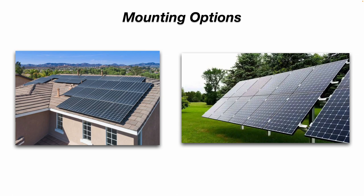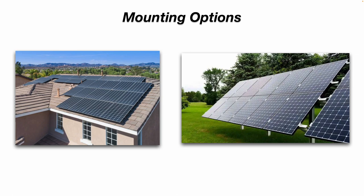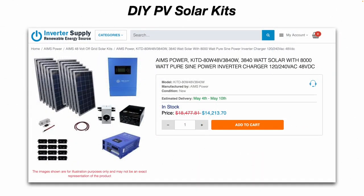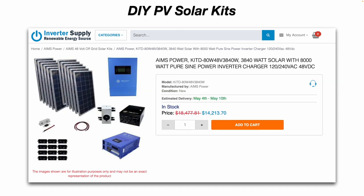A couple more points about solar panels from an insurance or maintenance standpoint. If you live somewhere that gets a lot of snow or hail, talk to your solar panel company about that before you buy. Ask them what sort of maintenance they provide and what warranty coverage applies if panels get damaged by hail or a hurricane. Lastly, they do make do-it-yourself PV solar kits. This one is from Inverter Supply — this kit is rated for 8,000 watts, it's a pure sine wave, and it comes with an inverter, charge controller, etc. Quick disclaimer: this video is not a paid promotion for any make, model, brand, product, or vendor mentioned.